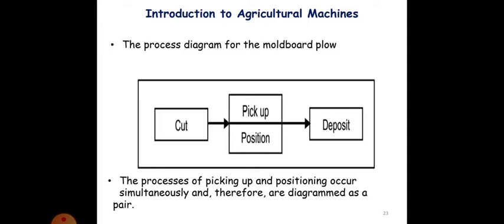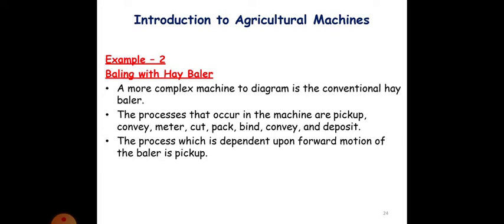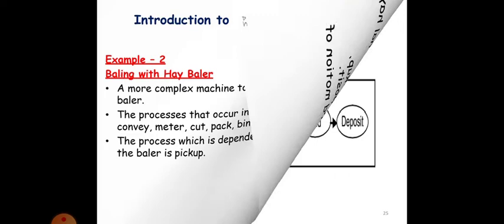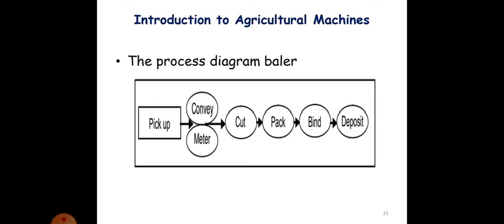The second example is baling with hay baler. A more complex machine to diagram. The processes that occur in the machine are: pick up, convey, meter, cut, pack, bind, convey, and deposit. The process which is dependent upon the forward motion of the baler is pick up. So you should understand the process diagram comes like this. First pick up, then convey and meter, then cut, pack, bind, and deposit.